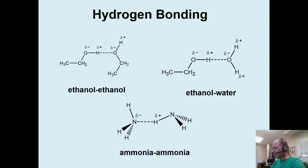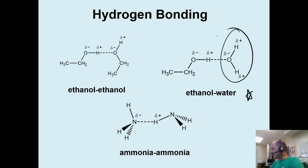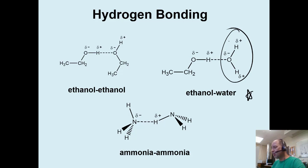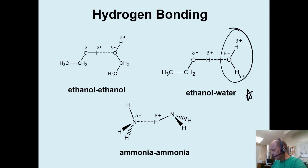Hydrogen bonding does not have to occur between like molecules — so it doesn't have to be water and water; it can also be water and ethanol. As long as we have a water molecule that is polar and an ethanol molecule that is polar, they can interact with their positive and negative ends. This will lead to the next concept about solubility — polar molecules can mix with other polar molecules and therefore are miscible, or dissolve in each other. All you have to have is a dipole that involves hydrogen, and that's called hydrogen bonding.